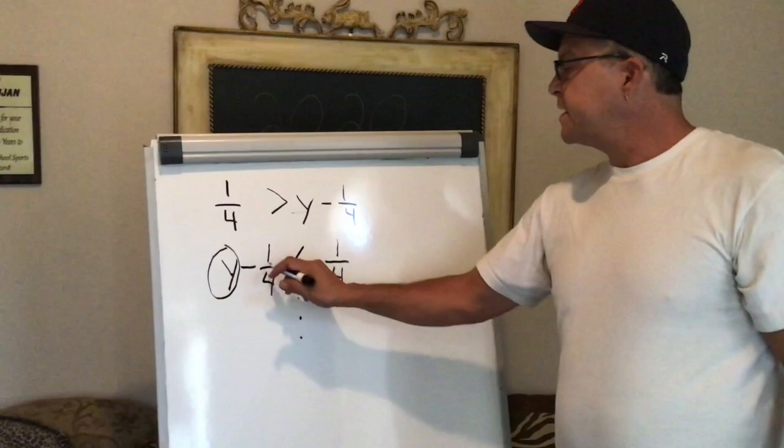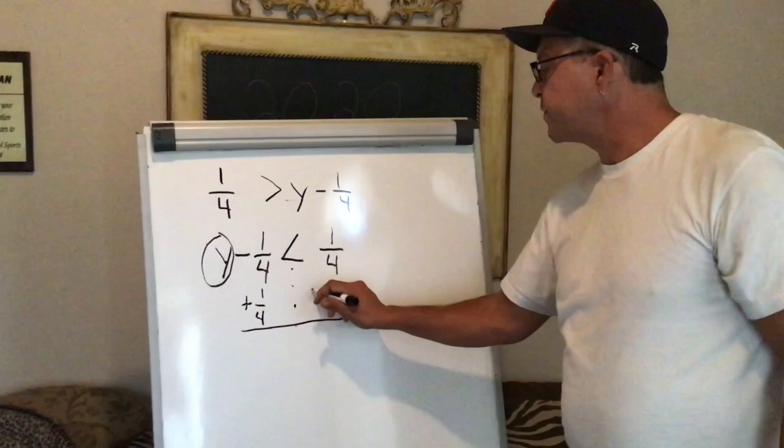Now to solve this, I want to isolate the variable. The opposite of subtracting a fourth is adding a fourth, and I'm going to do this to both sides.